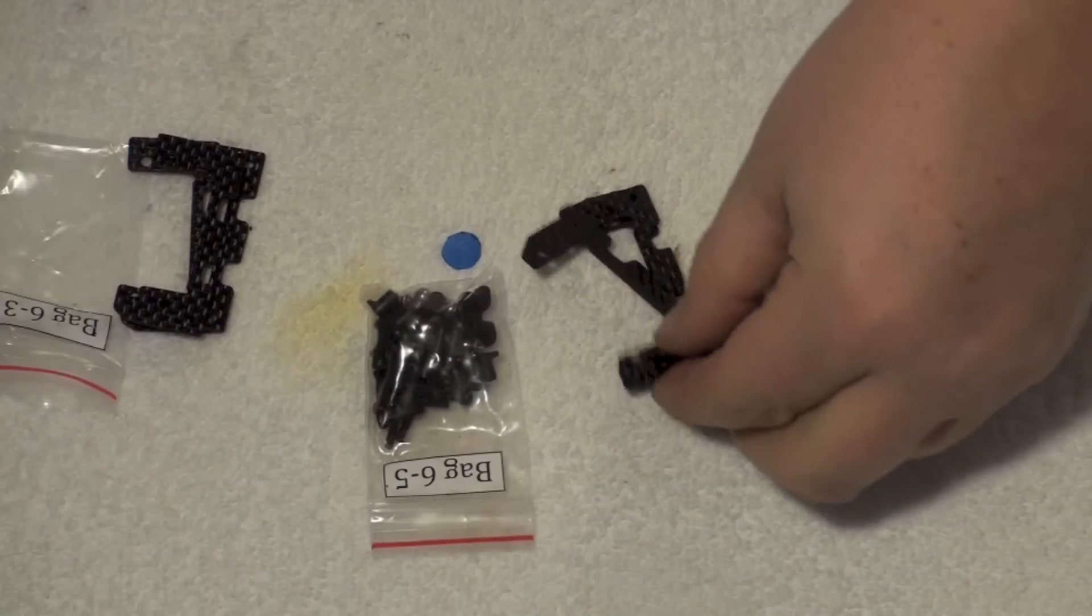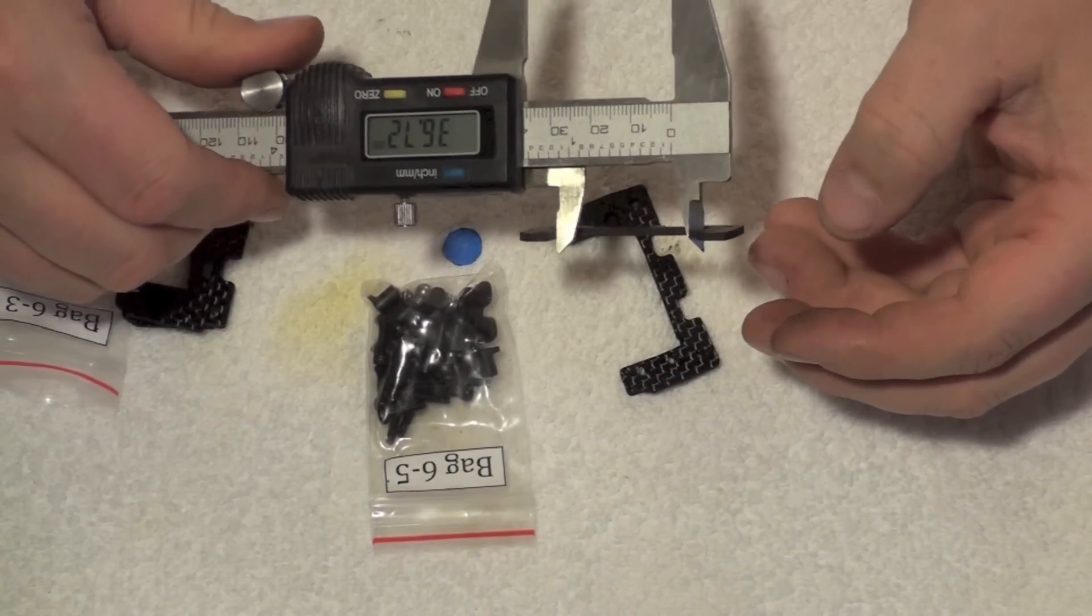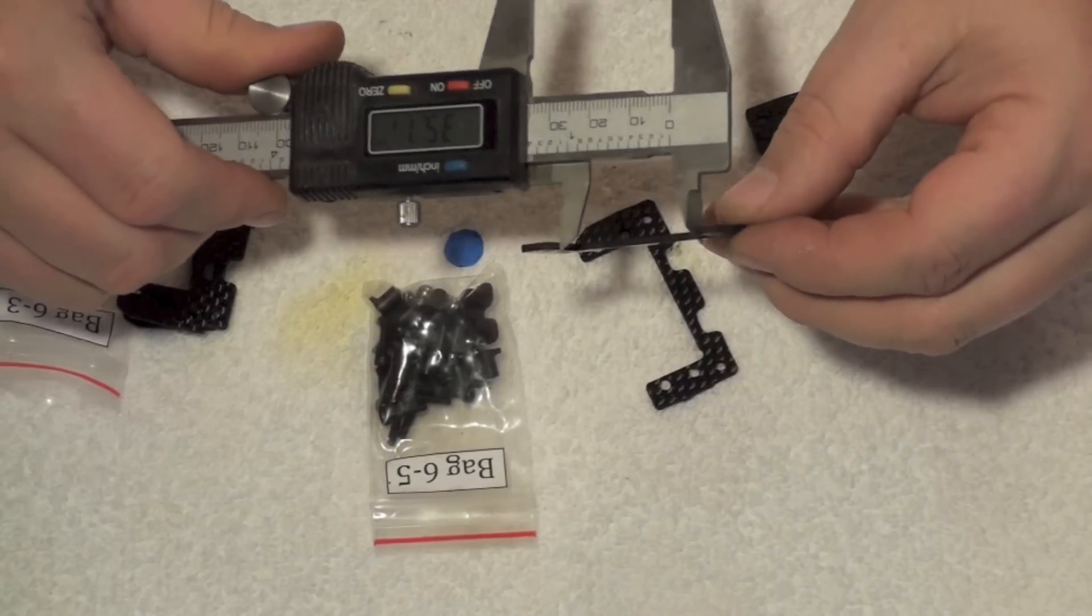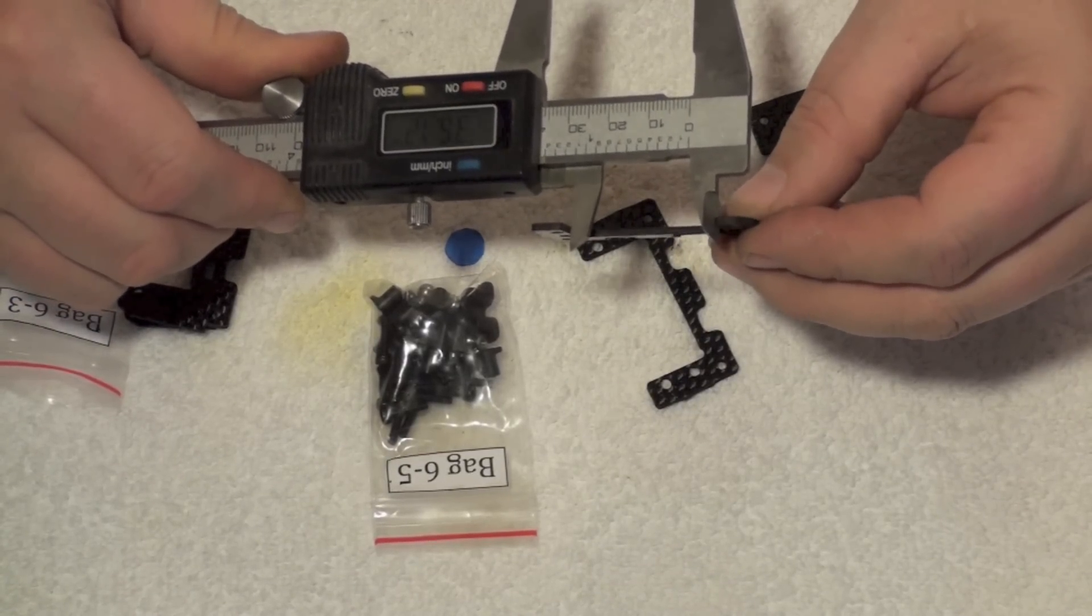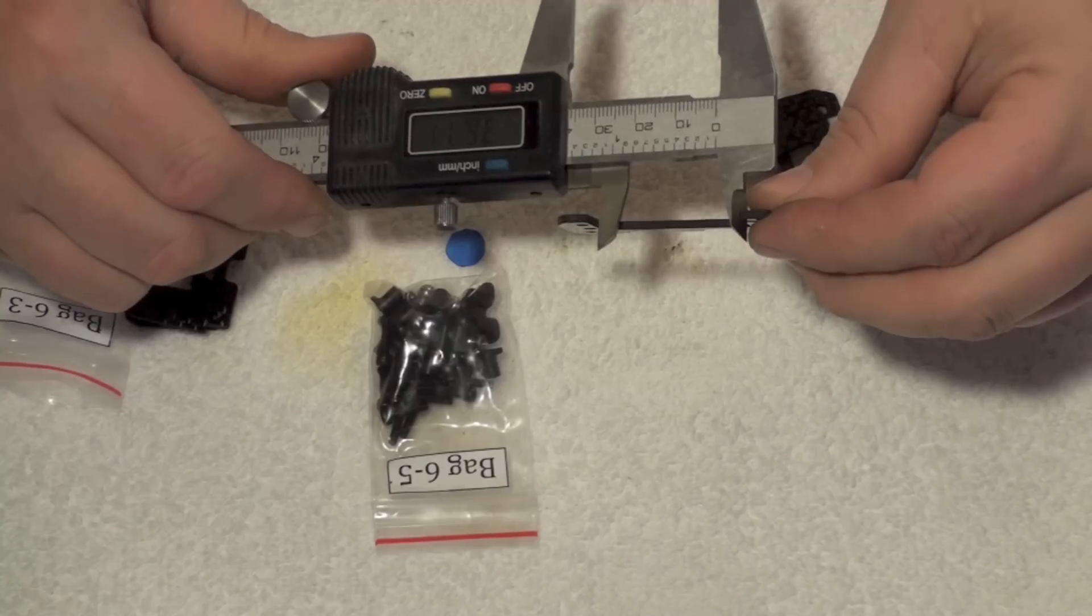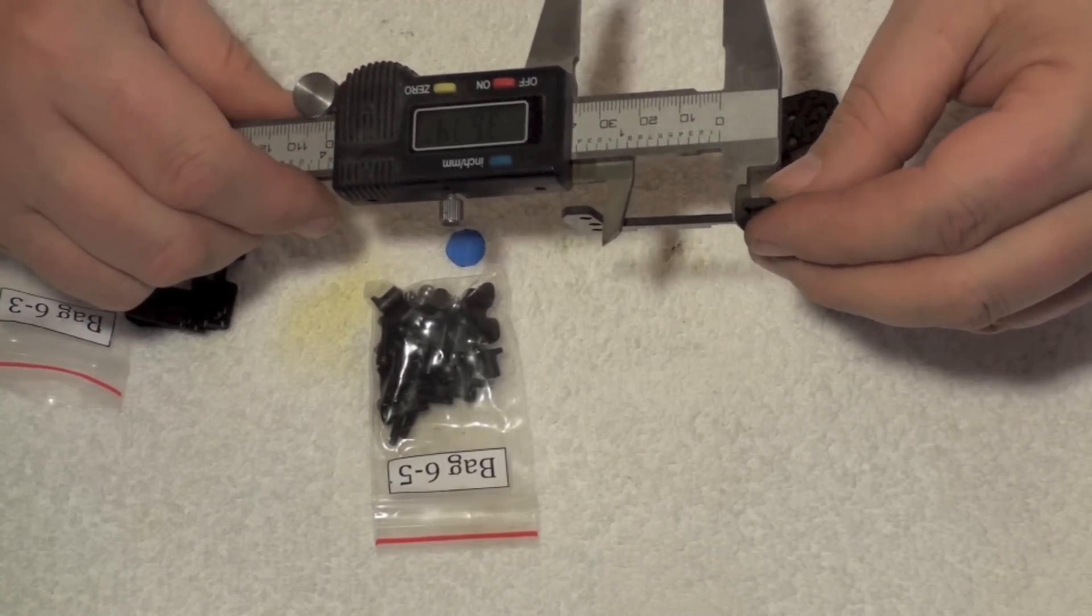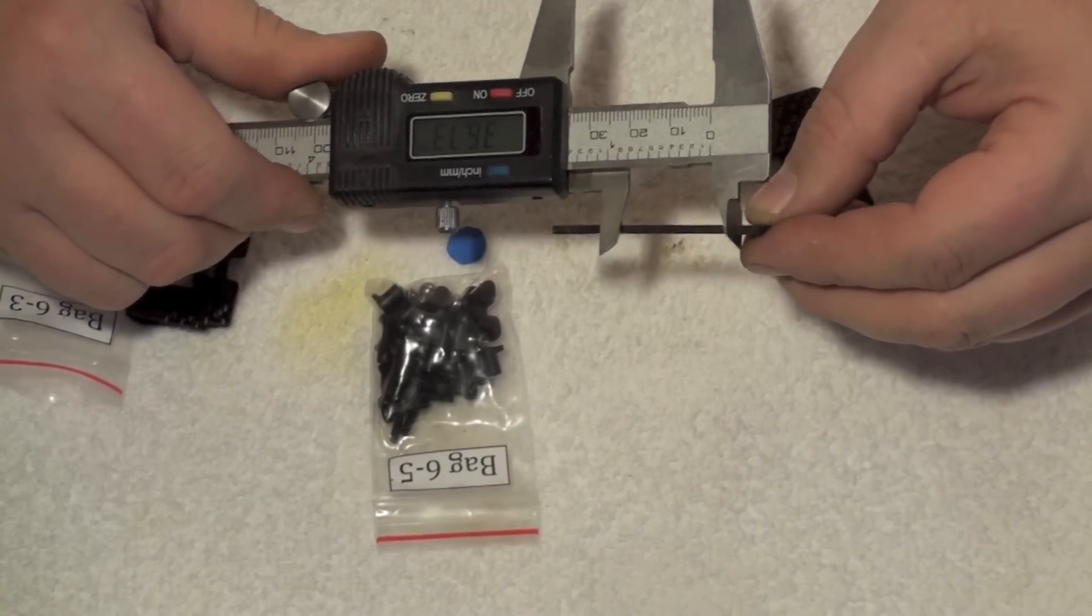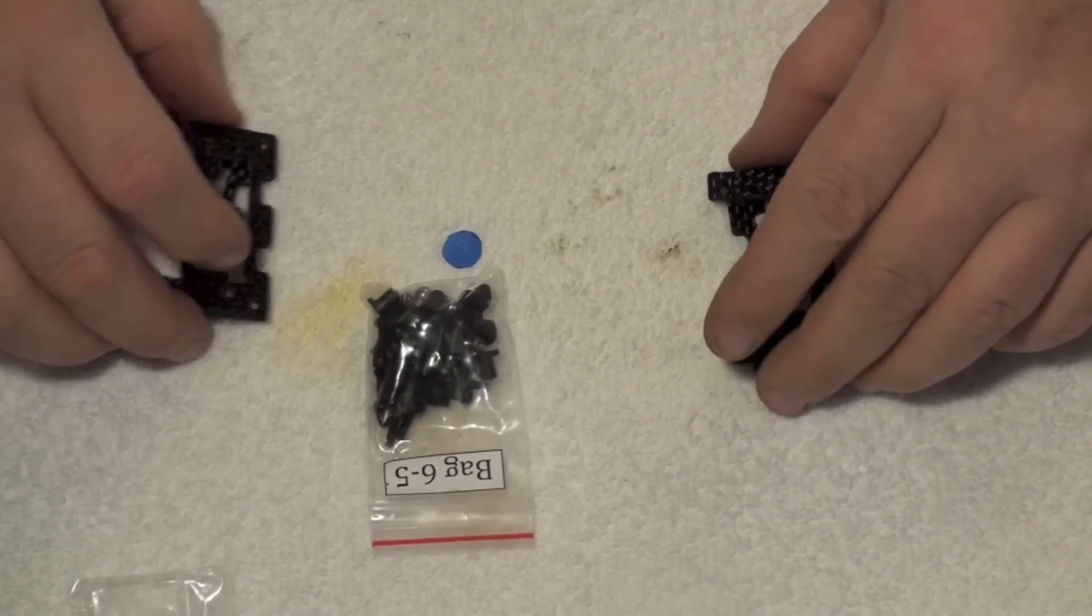And we'll look inside bag 6.4 also, and here we have 36.72, 36.72, 36.72, and 36.74, so we'll call those the 36 millimeter plates. So in my kit, I have the correct parts.